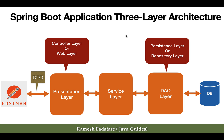The three-layer architecture is one of the commonly used architectural patterns in Spring Boot applications to organize the code base and separate concerns. Whenever we create a Spring Boot application, we create three packages corresponding to the three layers: for the presentation layer, we create a controller package to keep all the Spring MVC controllers; for the service layer, we create a service package to keep all the interfaces and classes; and for the DAO layer, we create a repository package to keep all the Spring Data JPA repositories.